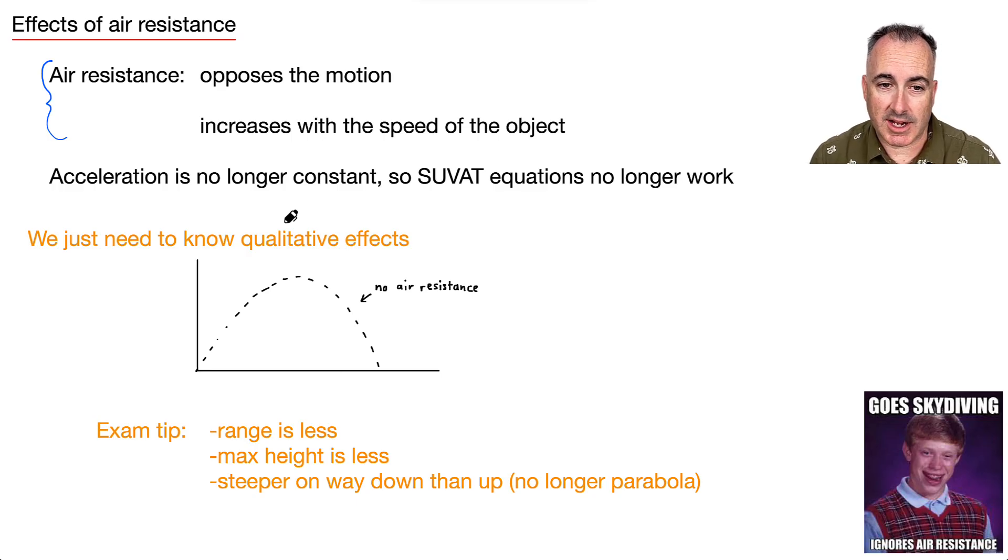So with no air resistance, it would be like a nice parabola that's symmetric here. So what happens in real life with real air resistance? Well, it's still going to start off like a parabola would, except it's going to go lower range, and then it actually drops off a lot more sudden.